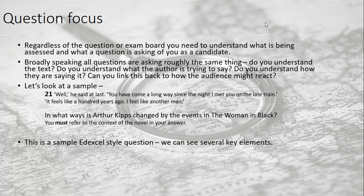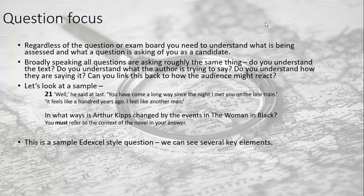This is an Edexcel-style question — one of their exemplar questions produced at the start of this particular syllabus. Here we've got a short quotation: 'Well, he said, at last you've come a long way since the night I met you on the late train. It feels like a hundred years ago. I feel like another man.' You should be able to place this quotation — it's from Chapter 11, 'A Packet of Letters.' It focuses on the character of Arthur Kipps, and you should identify that the first line is Samuel Daly speaking, and the second is Arthur Kipps. The question asks: in what ways is Arthur Kipps changed by the events in The Woman in Black? You must refer to the context of the novel in your answer.